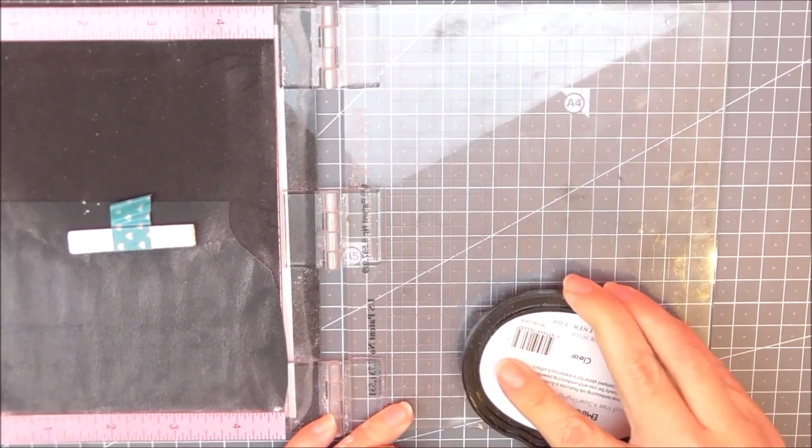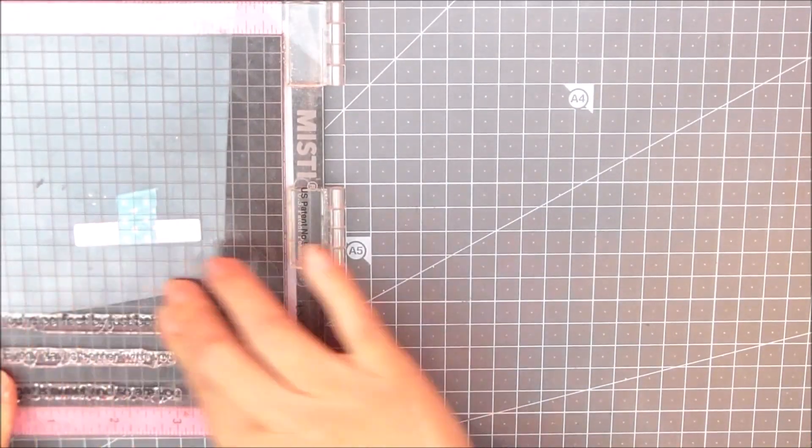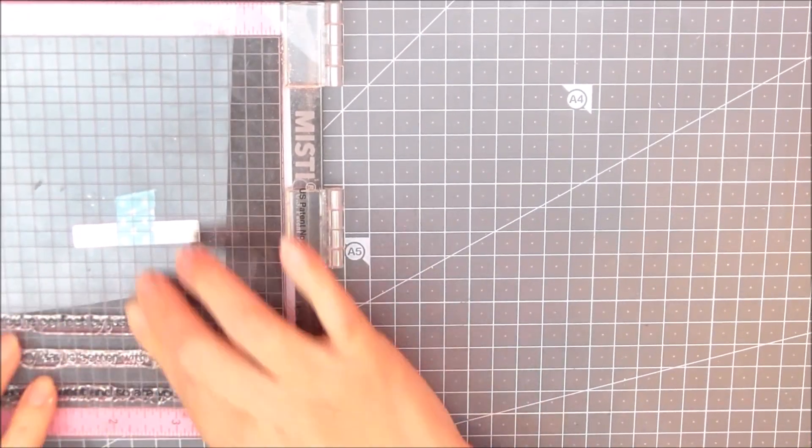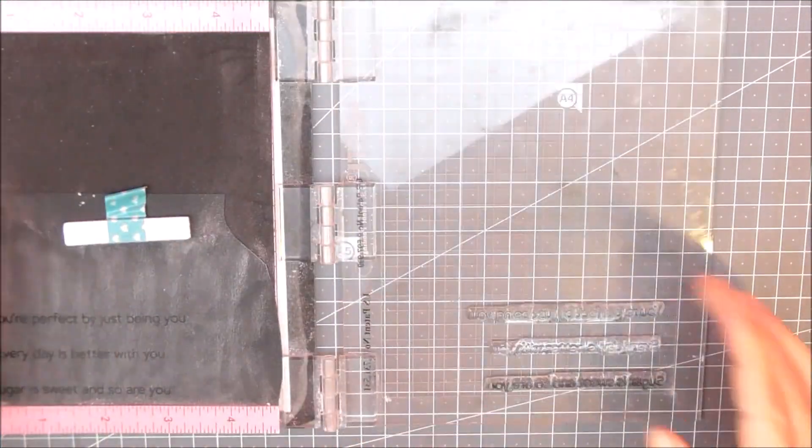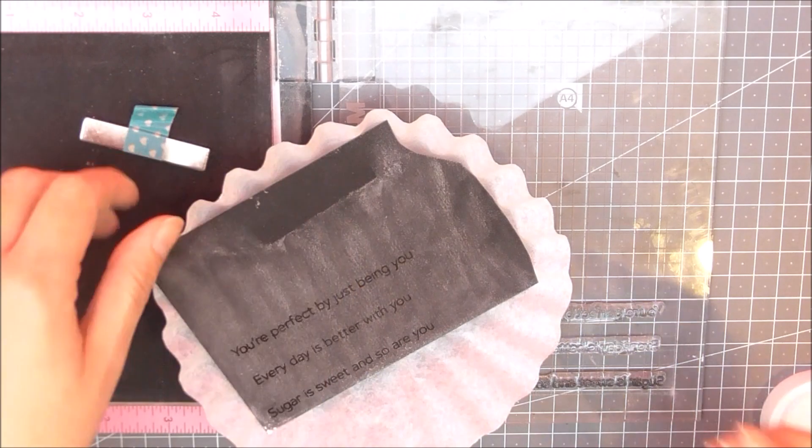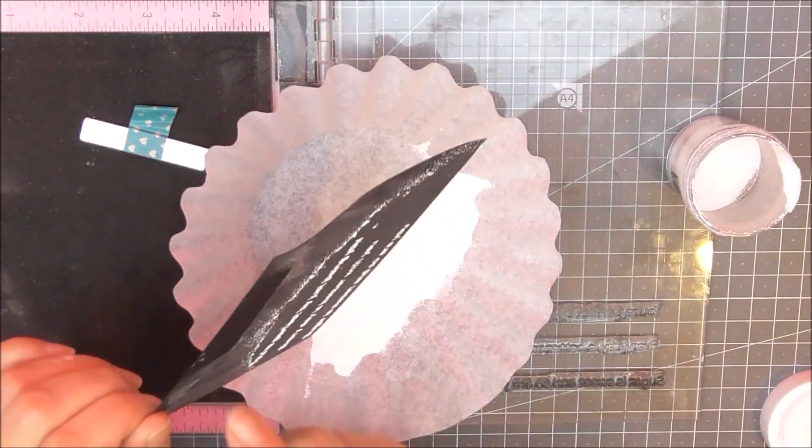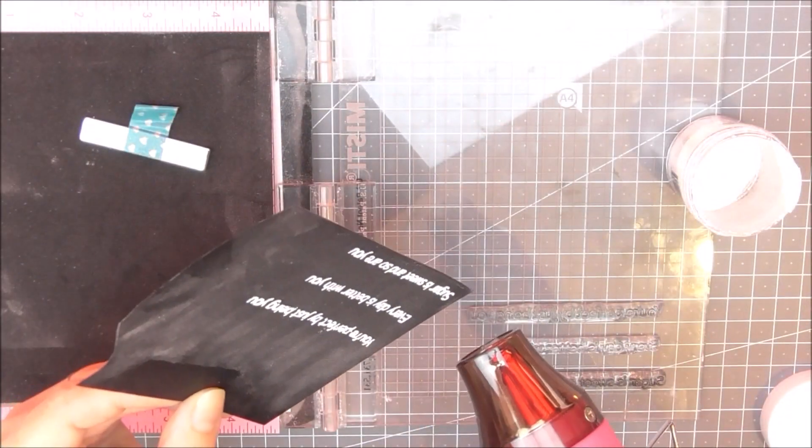I'm going to ink them up using some of the embossing ink from Altenew. This is a very great embossing ink because it's very sticky and it keeps the powder exactly where you want it. I'm then going to use some of the Pure White embossing powder, my favorite white embossing powder, tap off the excess, and then heat set this.